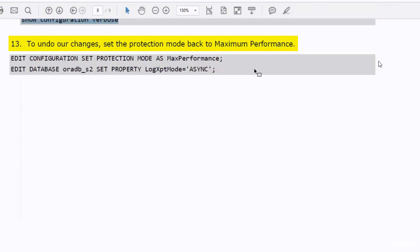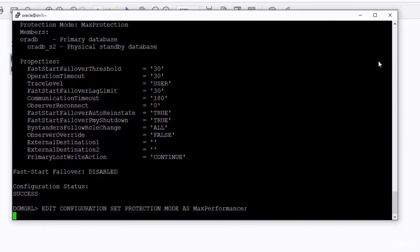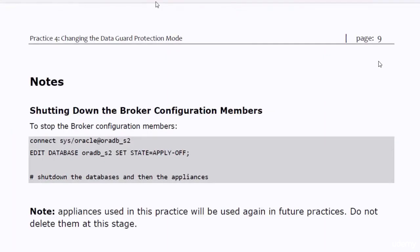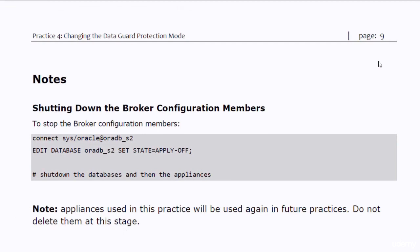Now let's undo our changes — I will set the protection mode back to maximum performance. Nothing special about shutting down the system in this practice. As we have done in the previous practices, you just turn off the apply process, shut down the standby database, shut down the primary database, and finally as root, shut down both appliances. You shouldn't find any problem with doing that. Please keep the appliance files — do not delete them, because we will use them for future practices in the course. Thanks for joining the practice. I look forward to seeing you in the next lecture. Goodbye for now.